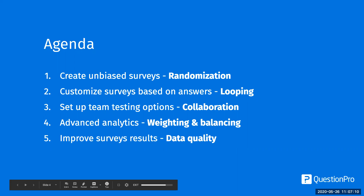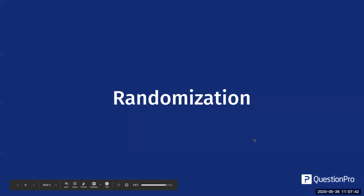Today we'll cover how you can create unbiased — or reduce the bias — in your surveys using randomization, talk about customizing surveys based on previous answer options and questions, so really about looping, set up team testing options in our collaboration mode, advanced analytics, talk about weighting and balancing, and also ways that you can improve your survey results around some of the data quality tools that we have.